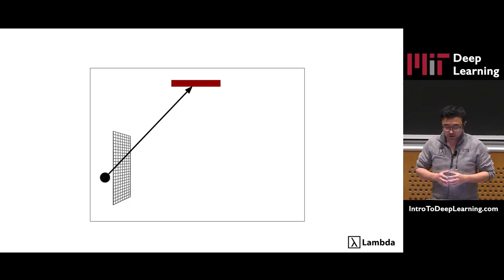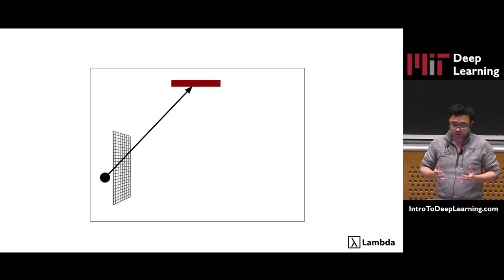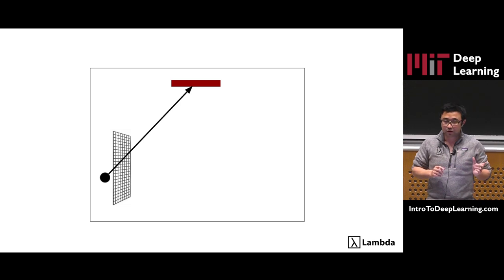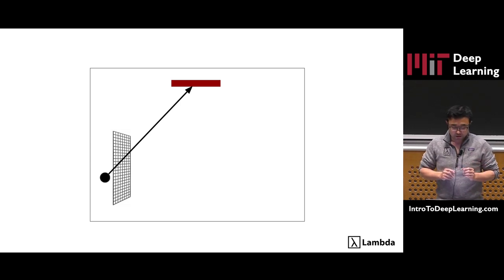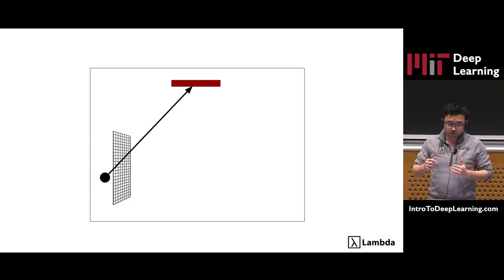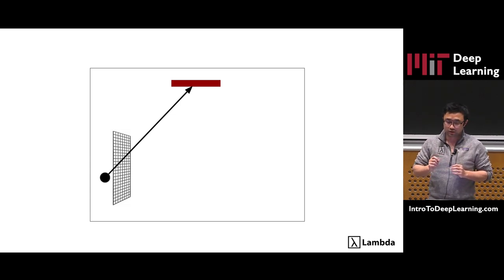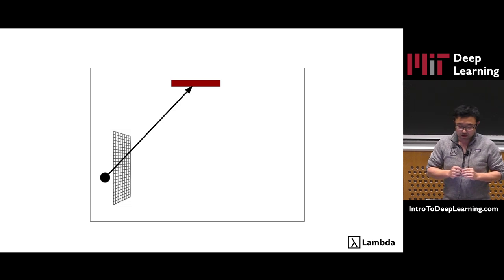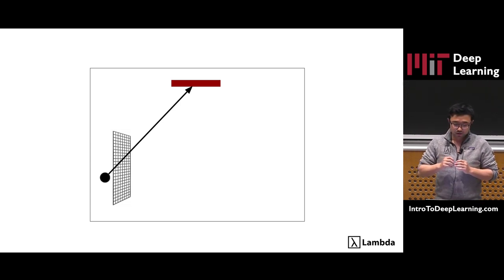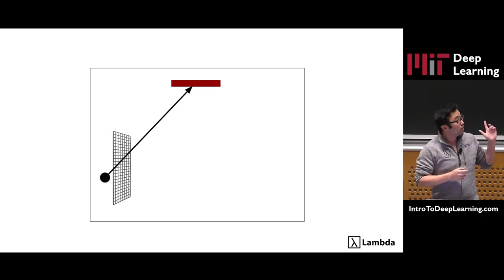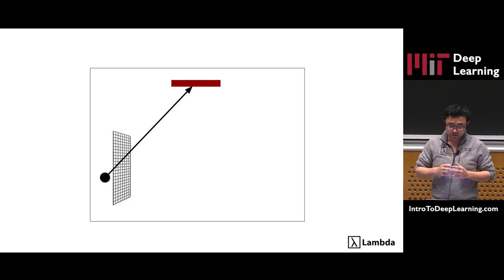This is a toy example of ray tracing, which is a widely used forward rendering technique. Imagine you are inside of a cave. The red bar is a light source, and the grid is the image plane. Ray tracing works by shooting rays from an imaginary eye to every pixel in the image grid, and it tries to compute the color of the object that you can see through the ray. In this case, the ray directly hits the light source, so we use the color of the light source to color in the pixel.